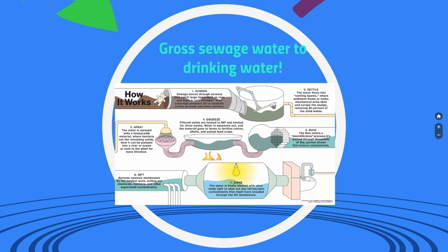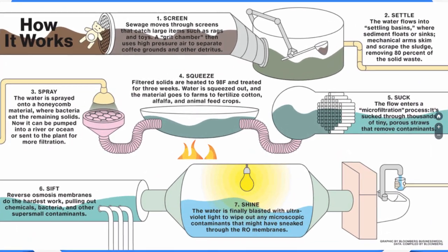So gross sewage water gets turned into wonderful drinking water — but how does it work? Looking at the diagram, we start at the top left with the screening step. Gross sewage water moves through screens that catch any large items that could go through the sewage drains — large toys or large debris that goes down our drains and into our sewers. This is the first thing that screens the water.